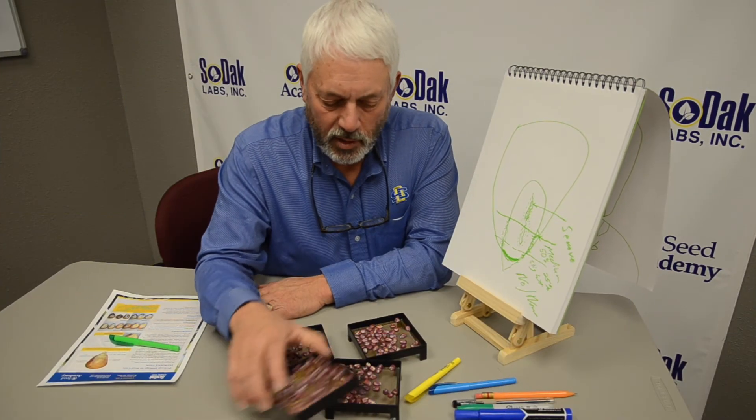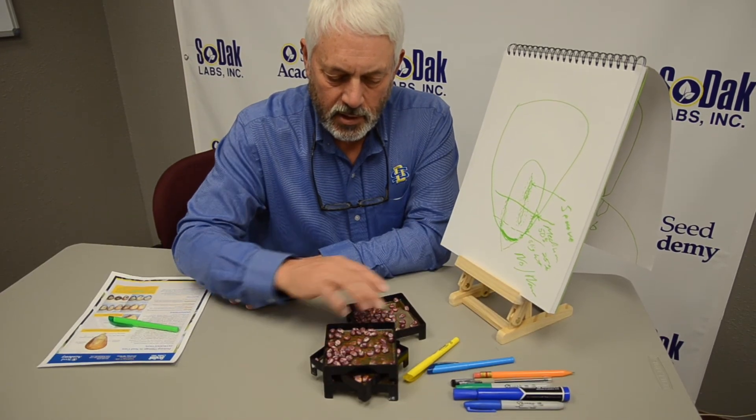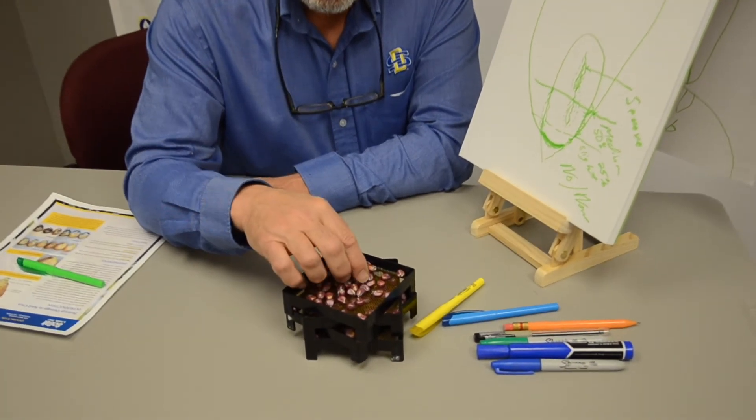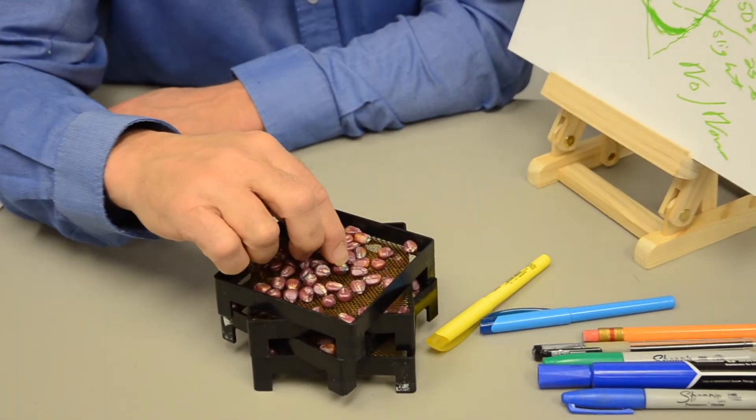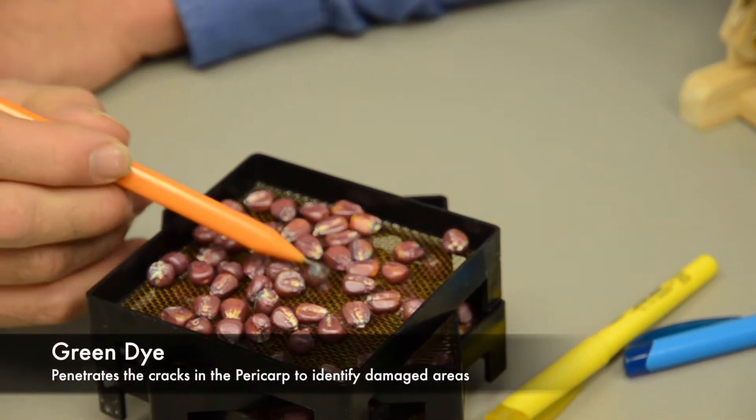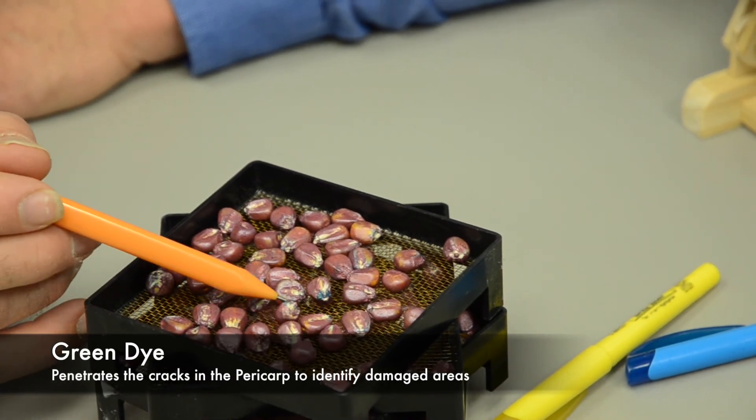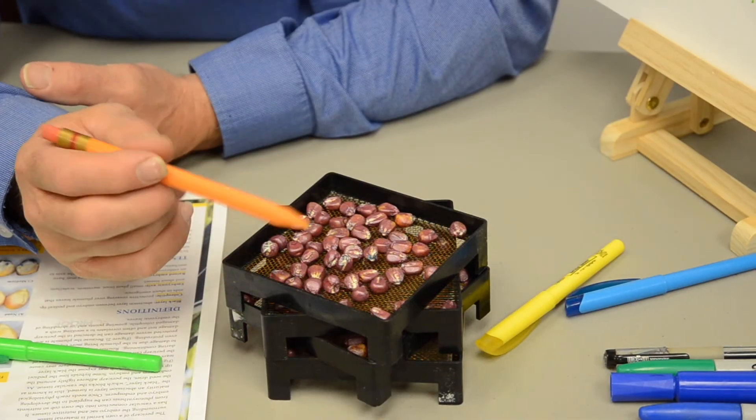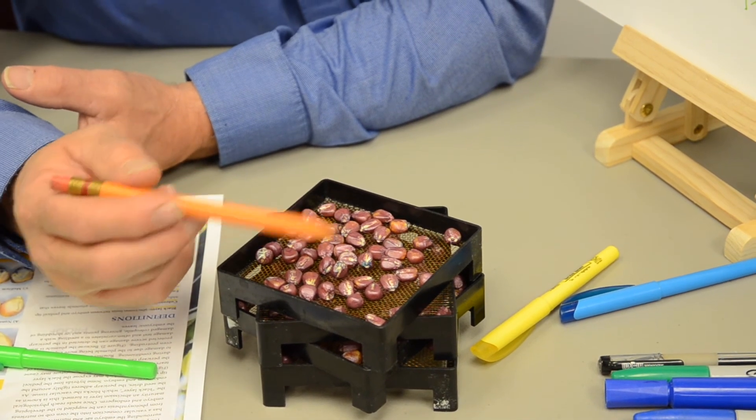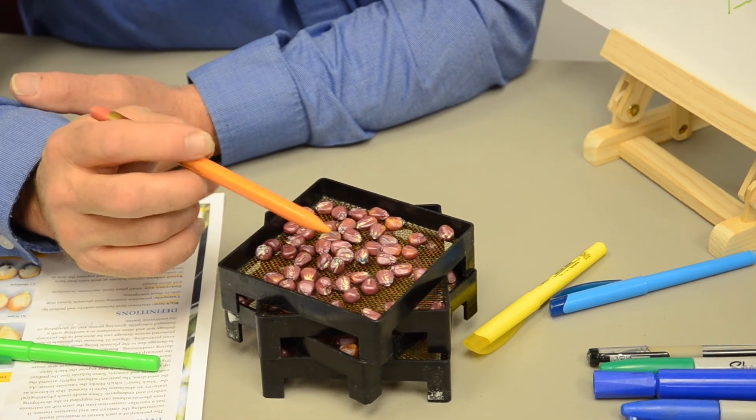We count out 50 seeds, four reps of 50 seeds, and then we actually put these seeds in a dye. I know you won't be able to really see this, but what the dye does is it penetrates the pericarp and we'll get staining. When we're evaluating this, we take the kernels and put them under three to five power after they've been stained, and we look for damage.